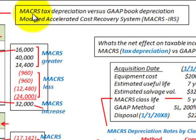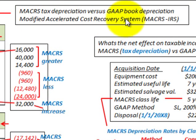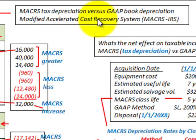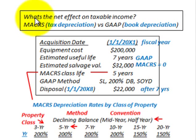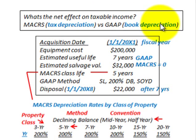What we're going to be looking at here is MACRS Tax Depreciation versus GAAP Book Depreciation. MACRS stands for the Modified Accelerated Cost Recovery System, and that's a requirement of the United States Internal Revenue Service when companies are depreciating their assets for tax purposes. We're going to be looking at the net effect on taxable income comparing MACRS Tax Depreciation versus GAAP Book Depreciation.